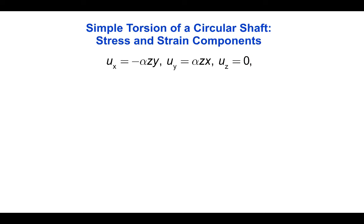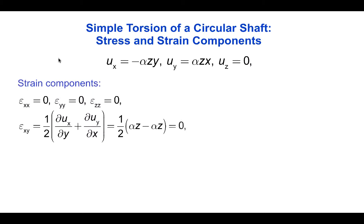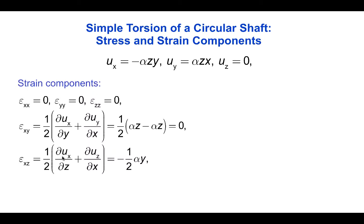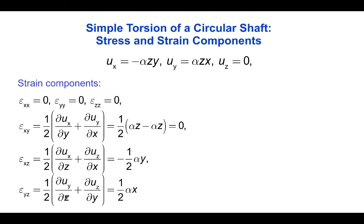Now that we have the displacements everywhere in the body, we can derive the strains from the strain-displacement relation. The normal strain components epsilon_xx, epsilon_yy, and epsilon_zz are all zero. For the shear components: epsilon_xy = 0.5*(del u_x / del y + del u_y / del x) = 0.5*(-alpha*z + alpha*z) = 0. However, epsilon_xz = 0.5*(del u_x / del z) = -alpha*y / 2, and epsilon_yz = 0.5*(del u_y / del z) = alpha*x / 2. So there are two non-zero shear strains in planes containing the z-axis.